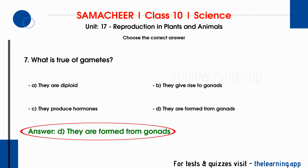Gametes are haploid, not diploid. When gametes fuse, they form a zygote. Gonads produce the gametes, and the gonads also produce hormones.